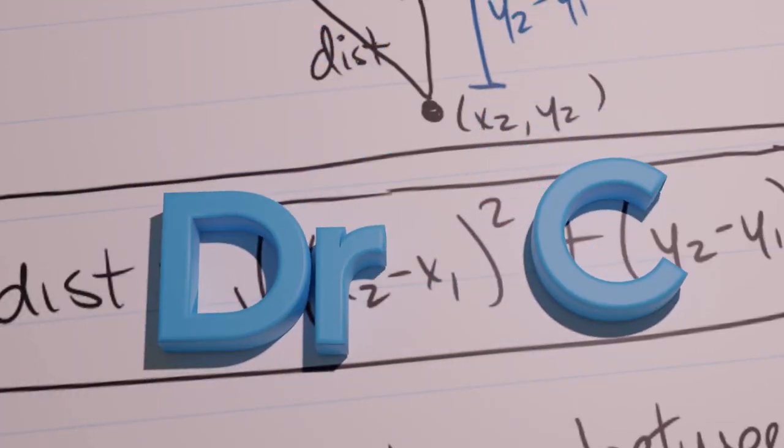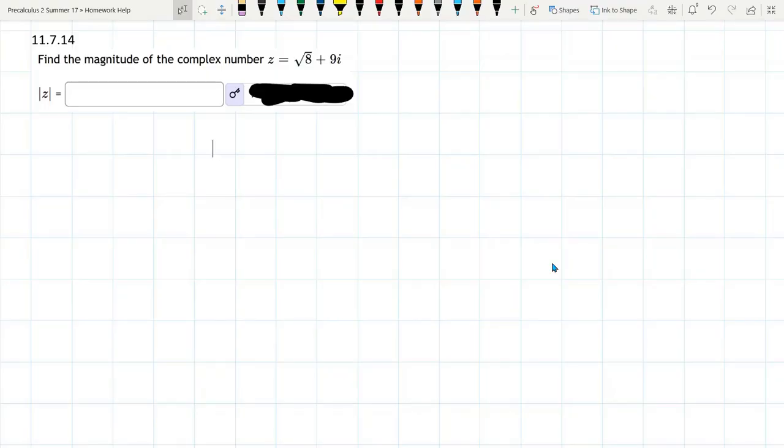We're going to find the magnitude of this complex number. All we need is the magnitude formula. For magnitude, it's a square root. So the magnitude of a plus bi is the square root of a squared plus b squared.